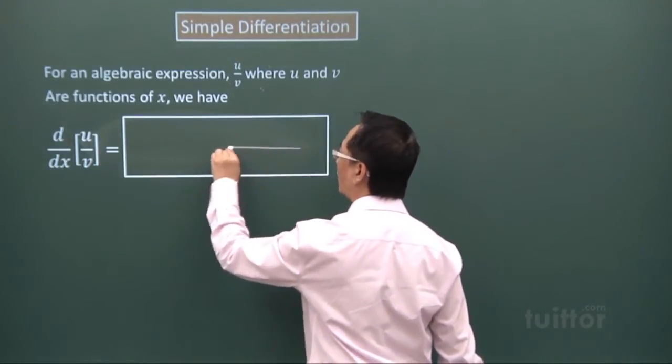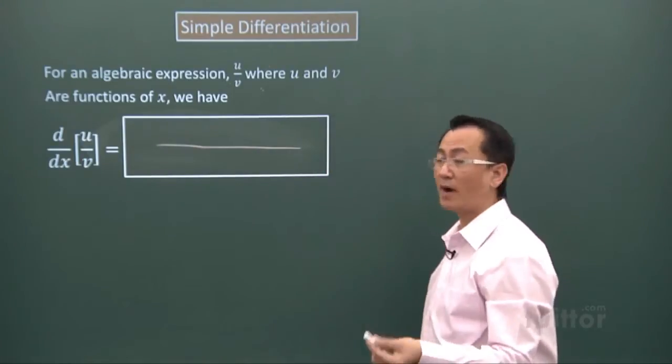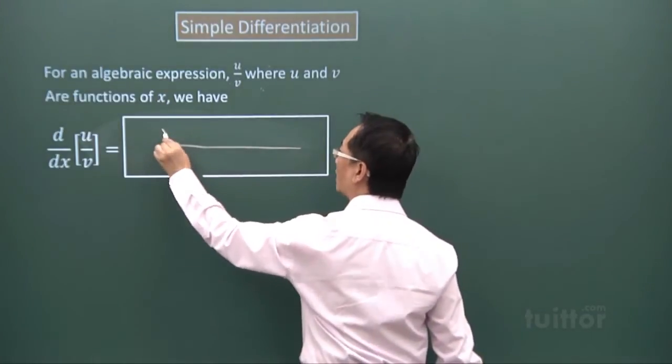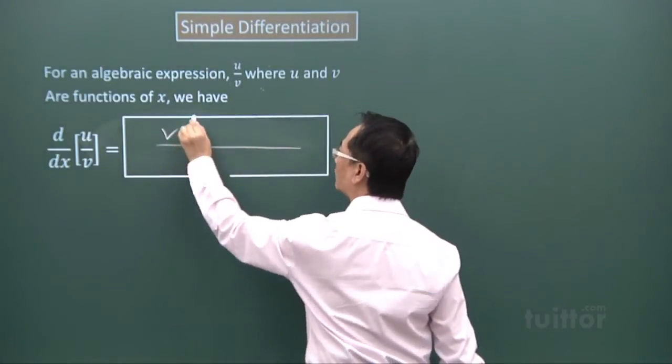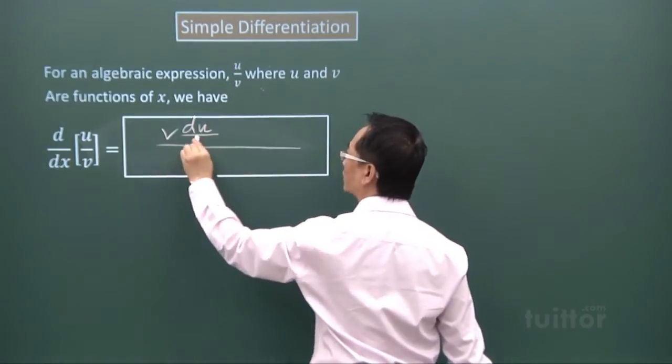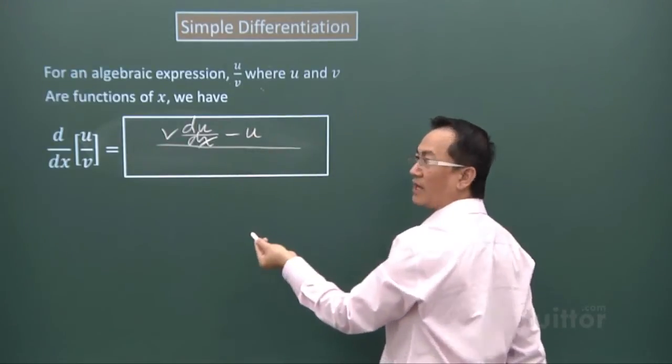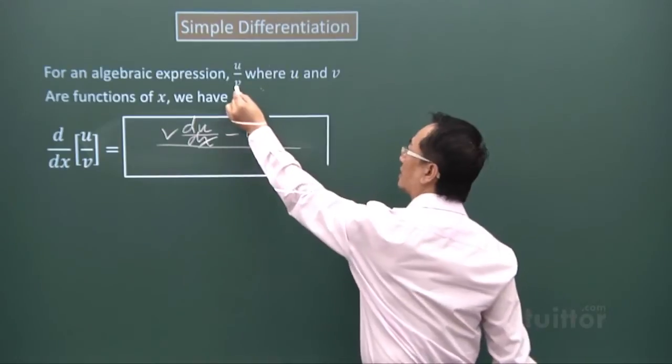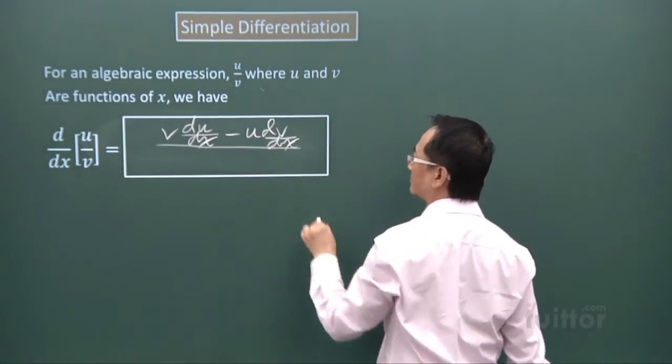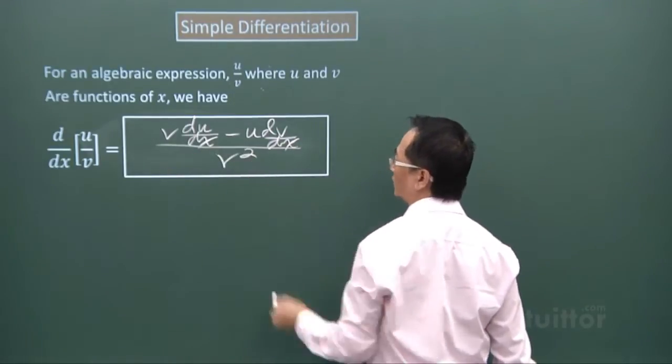Try to recall what we have gone through. It is important to let it stick in your mind. We take the denominator expression multiplied to the differentiation of your u function, minus u multiplied to the differentiation of the denominator expression, the whole expression over v squared.